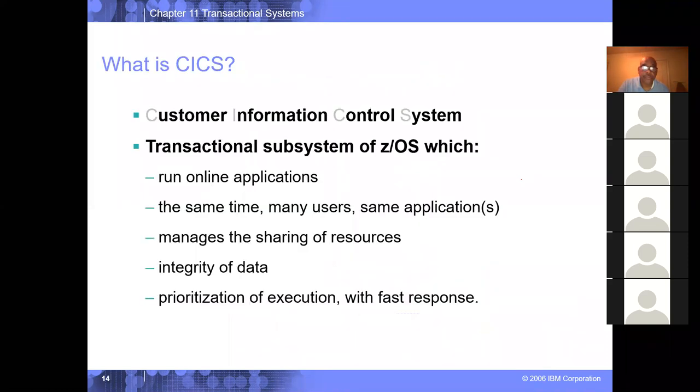Customer information control system, and now they don't call it subsystem, but they call it customer information control system, but sometimes you see it referred to as customer information control subsystem. And it says it's a transactional subsystem for z/OS, which runs online applications, can support many users, tens of thousands, hundreds of thousands of users. That Z13 video that we looked at early in the term when they were talking about Black Friday, whatever it was, that's CICS. That's CICS. Managing the integrity of data and prioritizes execution.